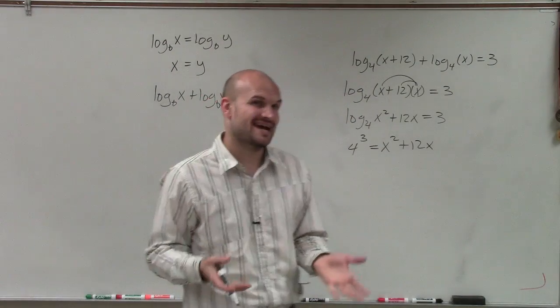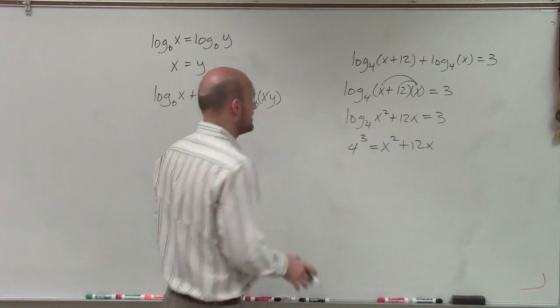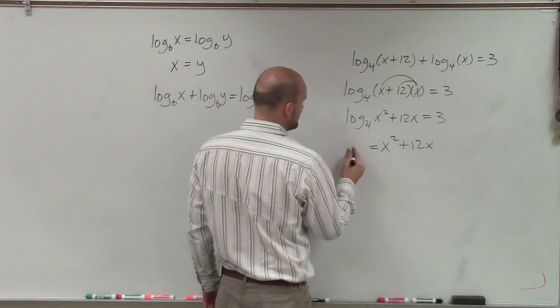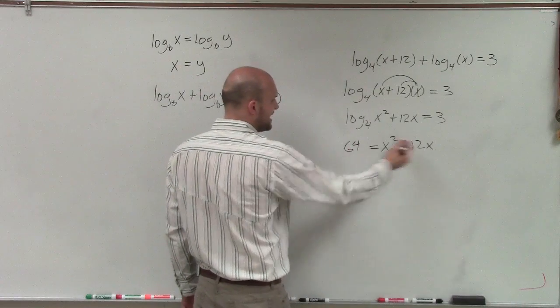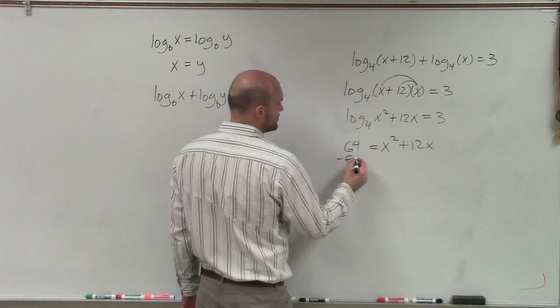To solve for x, since I have multiple terms, I can rewrite 4³ as 64. Since I have multiple terms of x and x², I need to set them equal to 0.